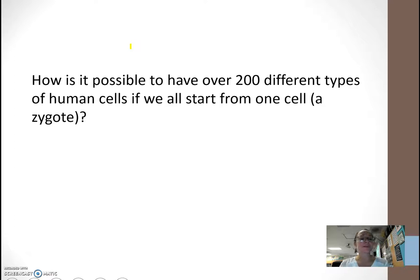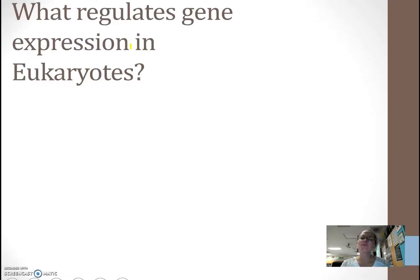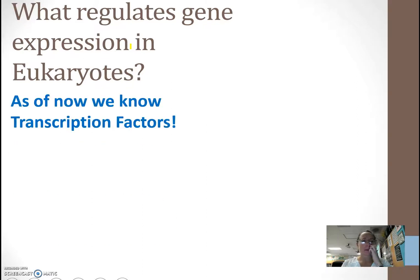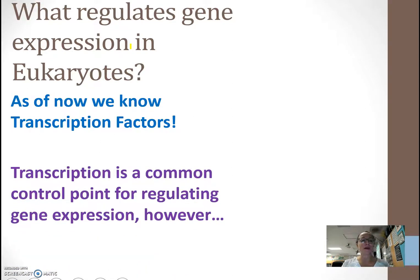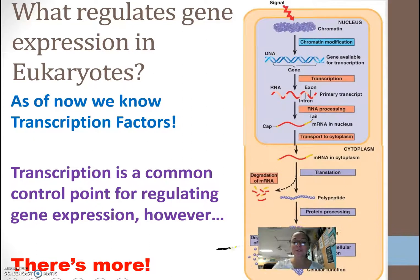Our question is: how is it possible to have over 200 different types of human cells if we all start from one? Now, what regulates gene expression in eukaryotes — what controls whether our genes are turned on or turned off? We know about transcription factors, which are a great starting point to regulate whether RNA polymerase is going to attach or not. But we actually have a lot more ways that we can regulate that final protein product.